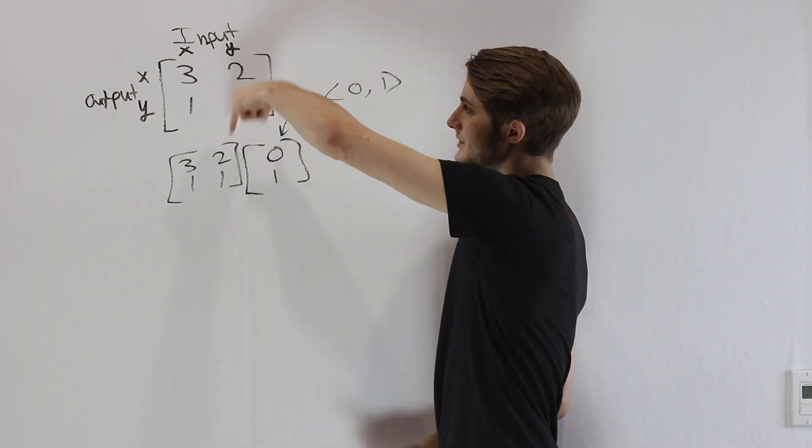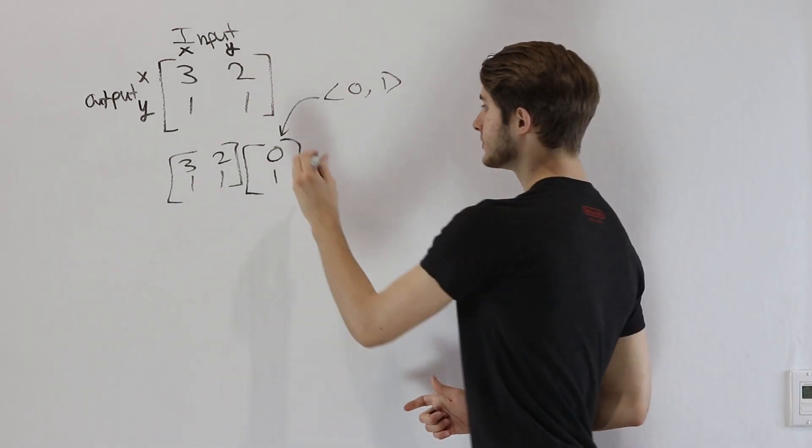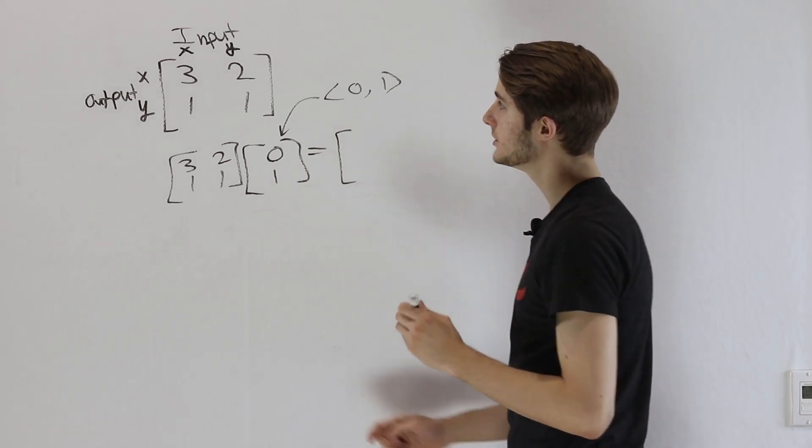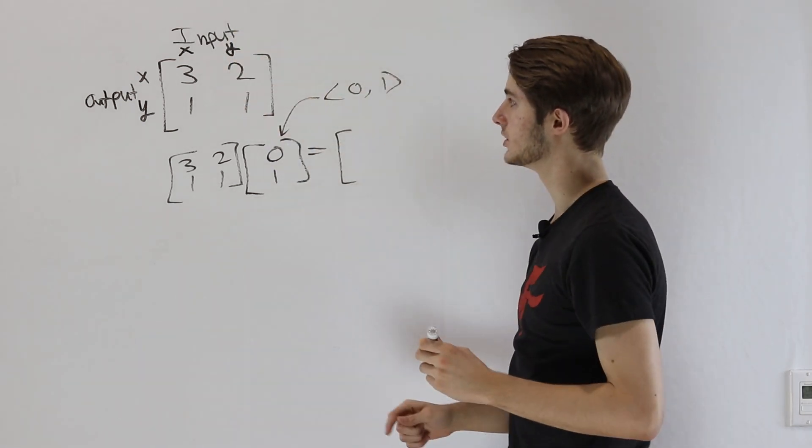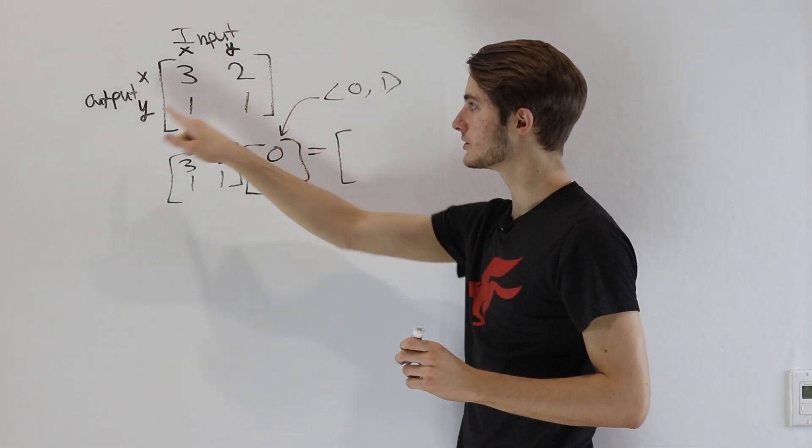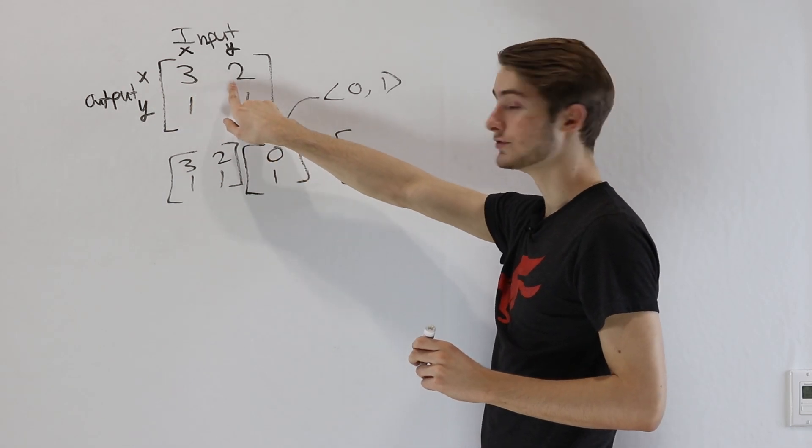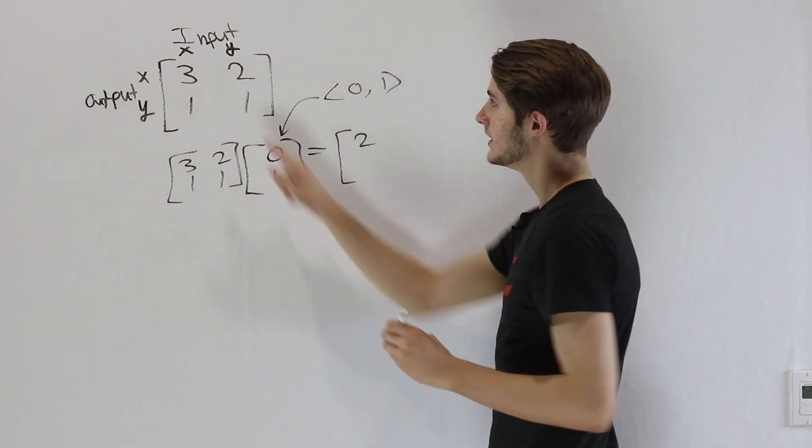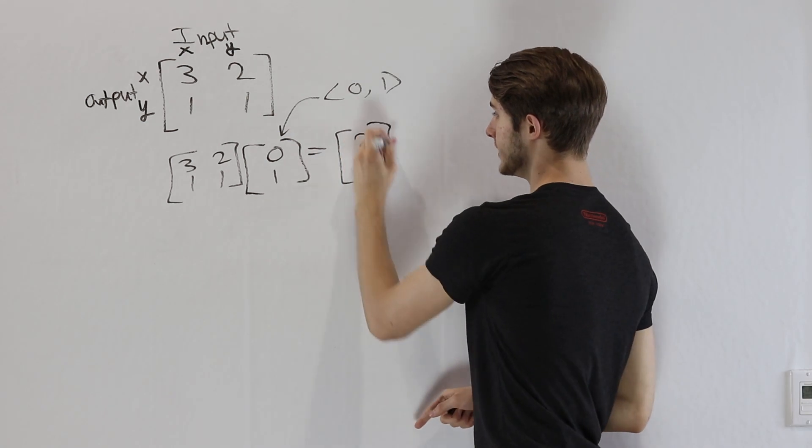We can think about that as the input to our matrix. So the only input we have in this case is a y, and that means when we look at the output, our output is going to come from this y input column. We see that a y input corresponds to an x output of 2 in this case, and it corresponds to a y output of 1.